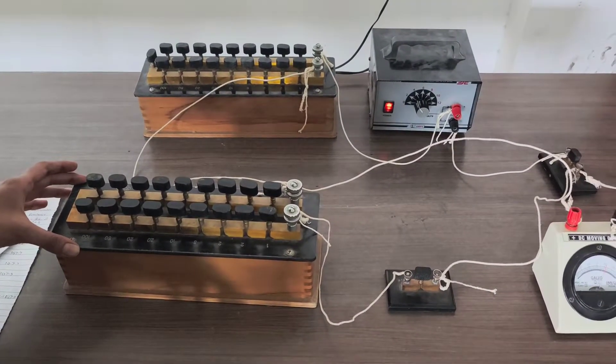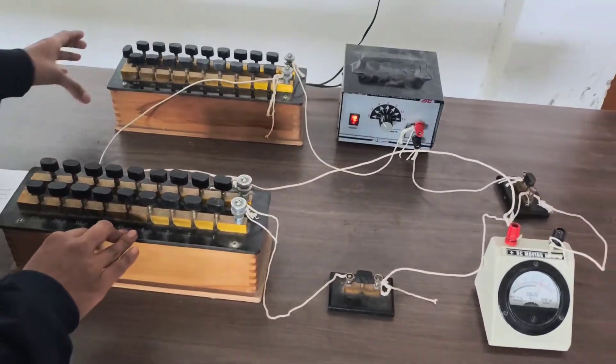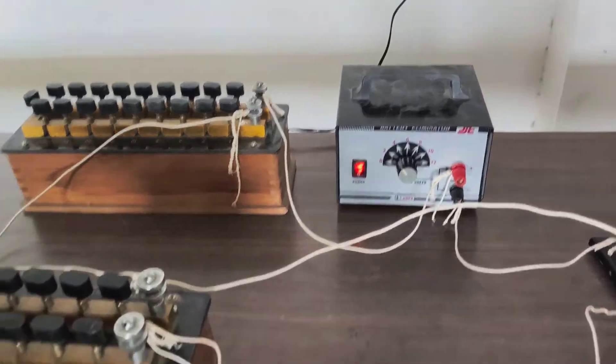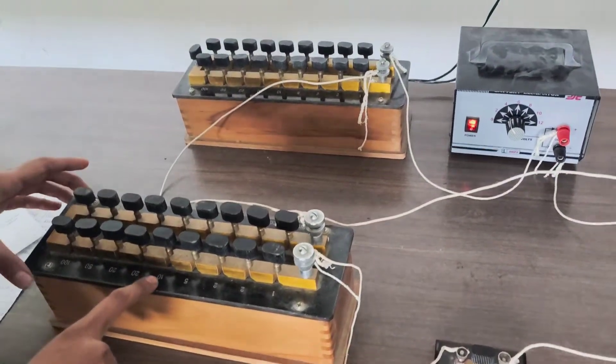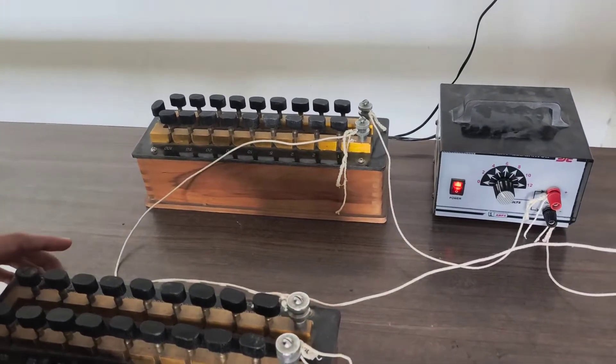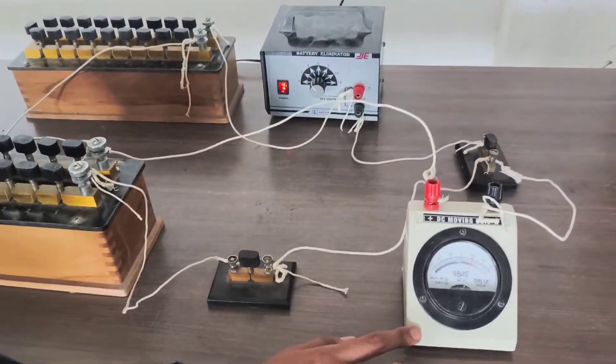So firstly for this experiment we need some apparatus. That are this battery eliminator which converts the high voltage into the lower voltage, two resistance boxes - one the larger one is denoted by R and the smaller one is denoted by S - and we need two keys and a galvanometer.